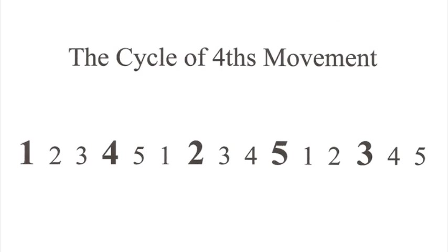All notes, chords, and keys ride these patterns wherever they go. In this case, it's through the cycle of fourths. The highlighted numbers show that every fourth pattern within the five-pattern repeating system is the next pattern in the cycle of fourths.